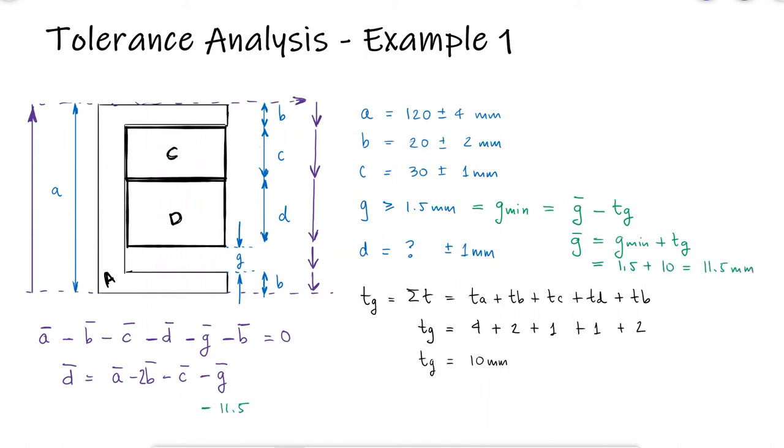This tells us that we should design our part D with a dimension D of 38.5 millimeters.